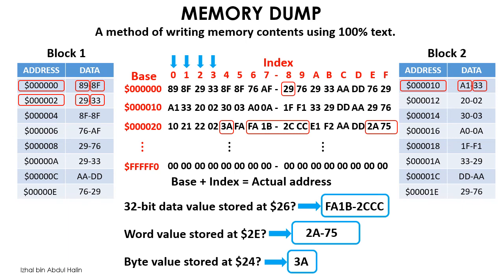Now that you have understood Big Endian order and the memory dump format, you have already understood the basics about 68K memory organization. Thank you for your attention and have an awesome day.